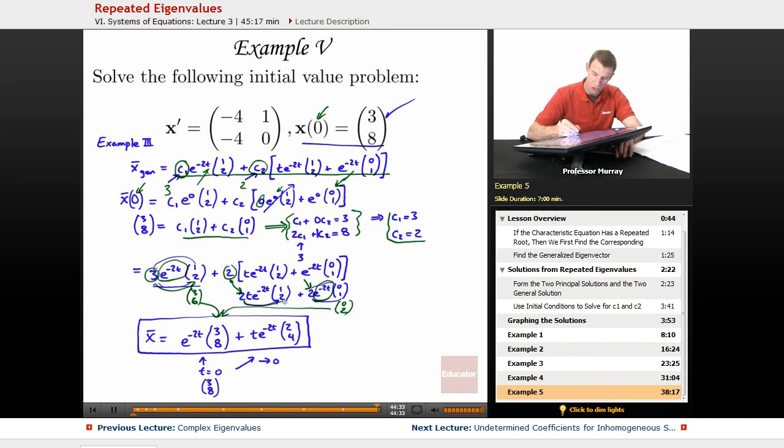And then this 2, distributing into the 1 and 2, gave me that 2 and 4. So, that's my final form of the solution there. But it's also easy to check if I plug in t equals 0 in here. This term would drop out because of the t outside, that t outside. This term would turn into 1 and I'd get (3, 8). So, it does check that I matched the initial condition that I was given.